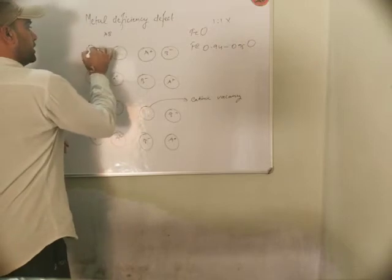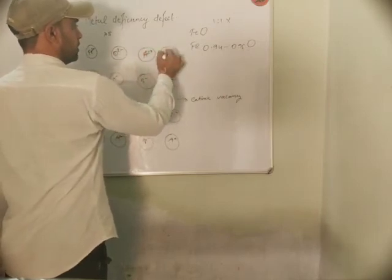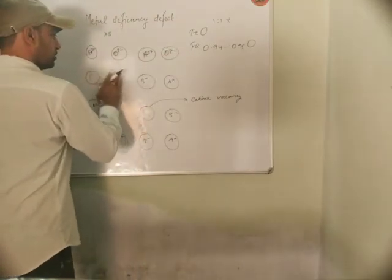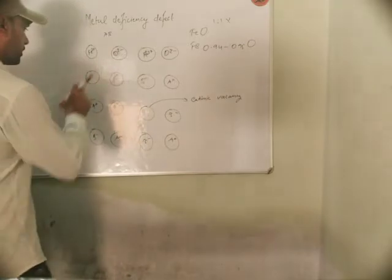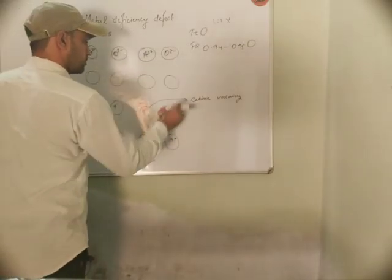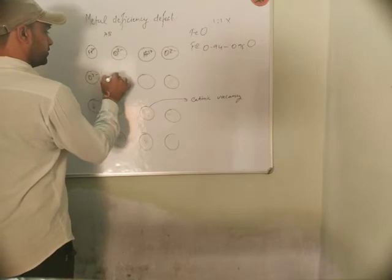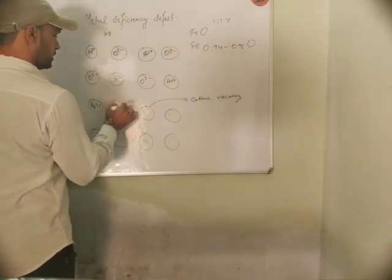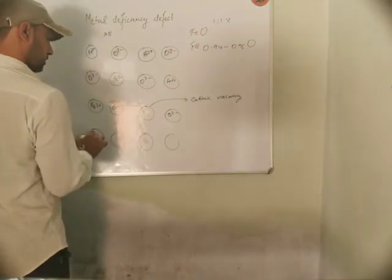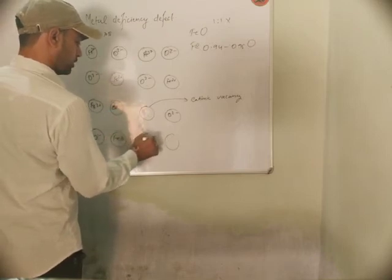In the FeO lattice we have Fe2 positive and O2 negative alternating. Here we can see: O2 negative, Fe2 positive, O2 negative, Fe2 positive, Fe2 positive, O2 negative, O2 negative, Fe3 positive, O2 negative, Fe2 positive — showing the arrangement with both Fe2+ and Fe3+ ions present.